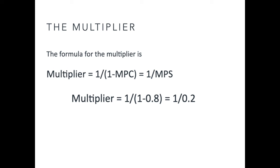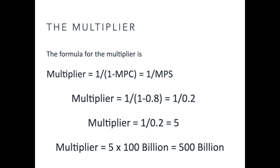The marginal propensity to consume was 0.8, leaving the marginal propensity to save at 0.2. To derive the multiplier, we divide 0.2 — the marginal propensity to save — into 1, giving a product of 5. The multiplier is 5 times $100 billion, which is how it grows to a $500 billion increase in gross domestic product.